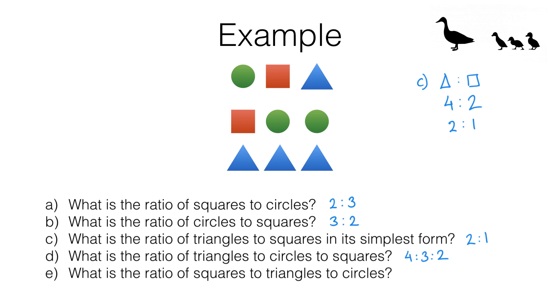Finally we've got the ratio of squares to triangles to circles. So it's going to involve these same numbers but we've got to get them in the right order. Squares to triangles to circles. That's going to be 2 because we've got 2 squares, to 4 because we have 4 triangles, to 3. So a ratio of 2 to 4 to 3.